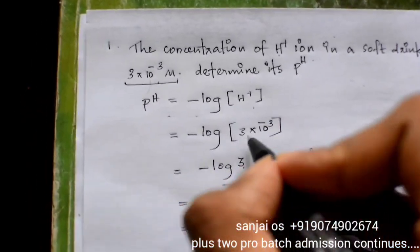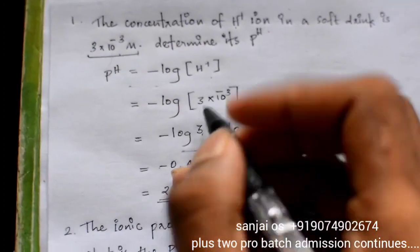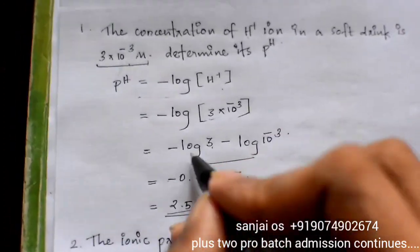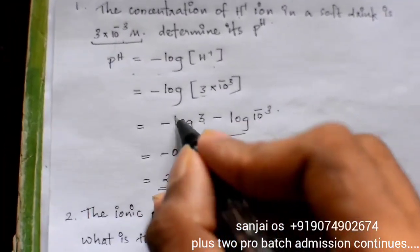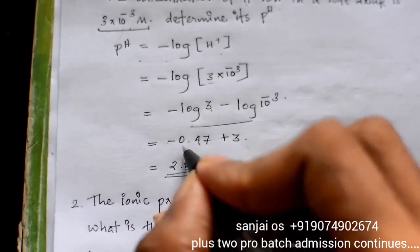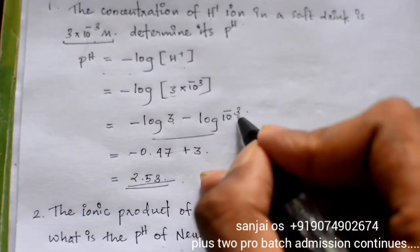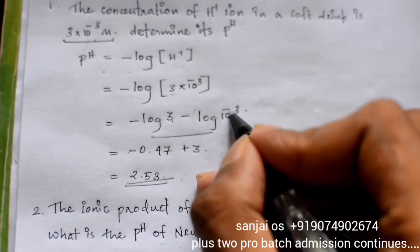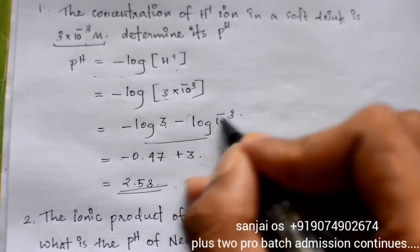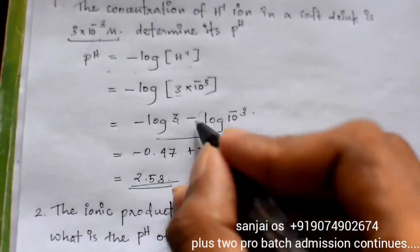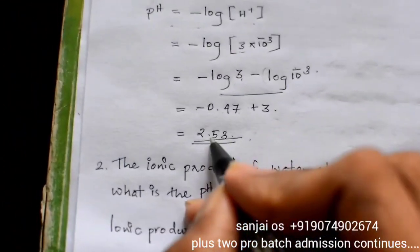We apply: minus log of 3 into 10 raised to minus 3. If minus log of 10 raised to minus 3 gives plus 3, then the answer is 2.53.